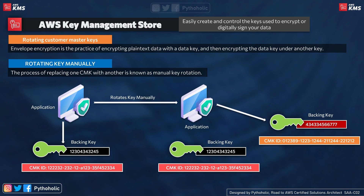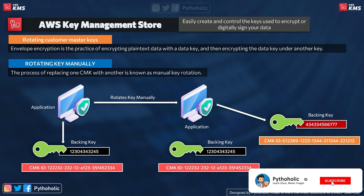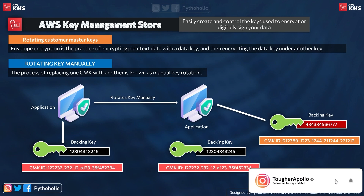To use the new CMK, you can use the `update-alias` operation to point the existing alias to the new CMK ARN and ID, so your applications are not affected even after creating a new CMK. When you create a new CMK, the alias ARN and target key ID change, but updating the alias handles that transparently. We have discussed CMK, symmetric and asymmetric keys, how rotation works, and now let's move on to how encryption works for S3 and how KMS is used.